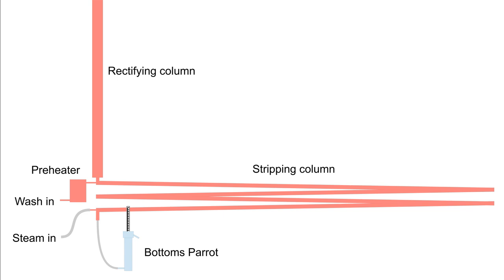So I began to remove lagging from the column. Column lagging reduces the power consumption of a still, so as lagging is removed, heating power — in my case steam input — has to increase.